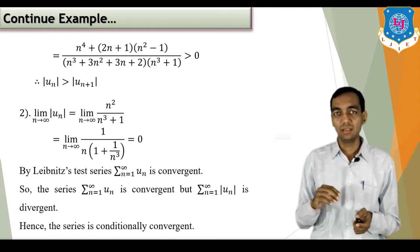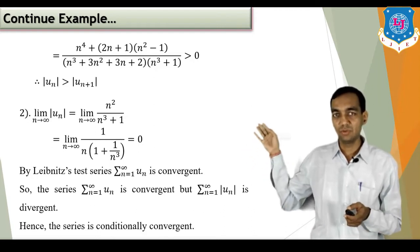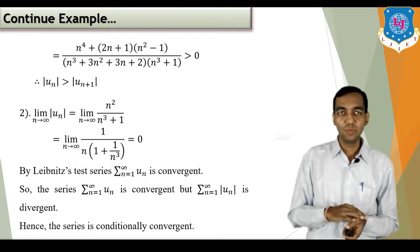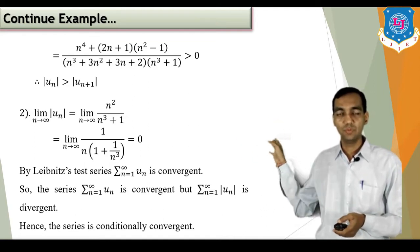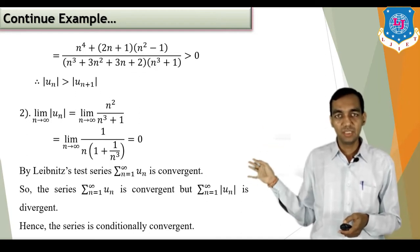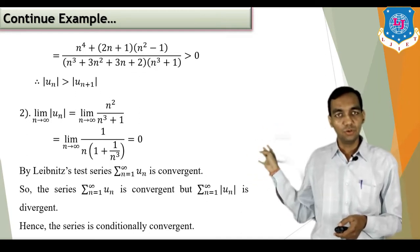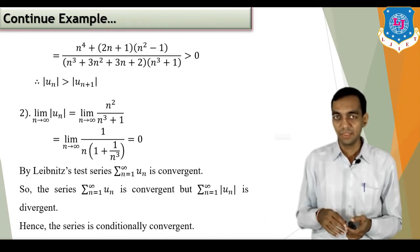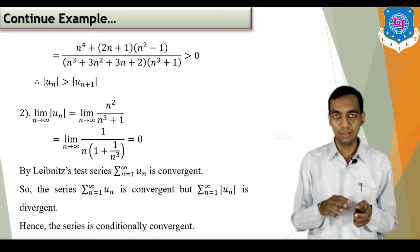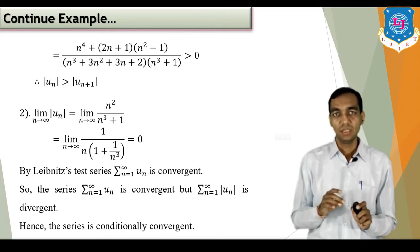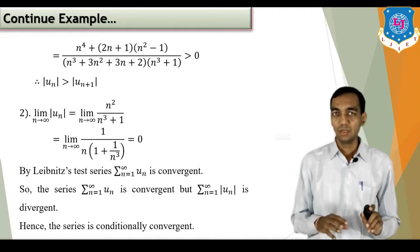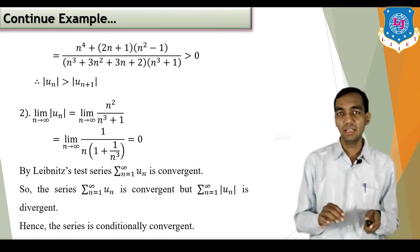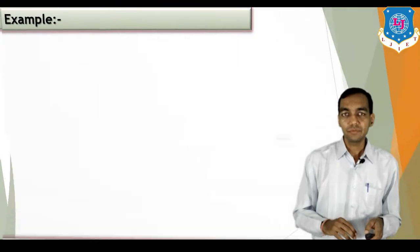Now finding the limit of |u_n|: limit as n→∞ of n²/(n³+1). Taking n³ common from the denominator gives 1/n · 1/(1+1/n³), so as n→∞ this limit is 0. Both conditions are satisfied — the series is numerically decreasing and the limit of the nth term is 0 — so by Leibniz test sigma u_n is convergent. But sigma |u_n| is divergent, so the given series sigma u_n is conditionally convergent.